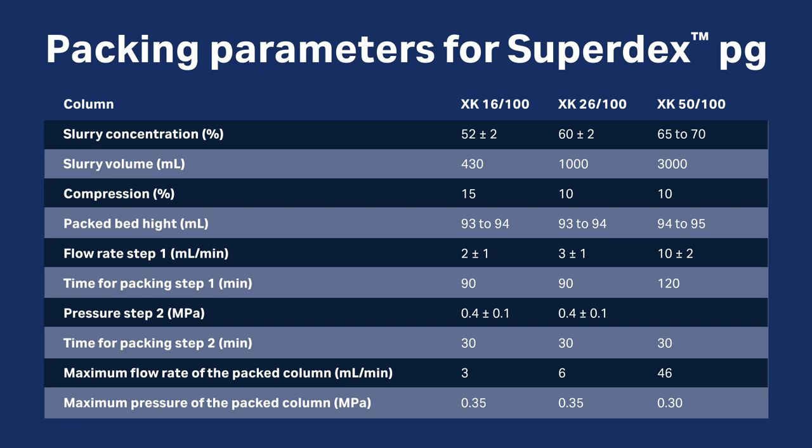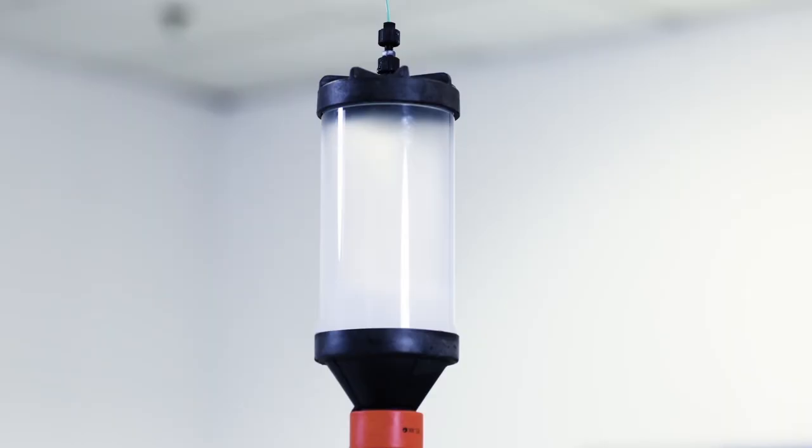If you work at lower temperature, reduce the flow accordingly to avoid high back pressure caused by high viscosity. Now the resin moves down the tube and settles.